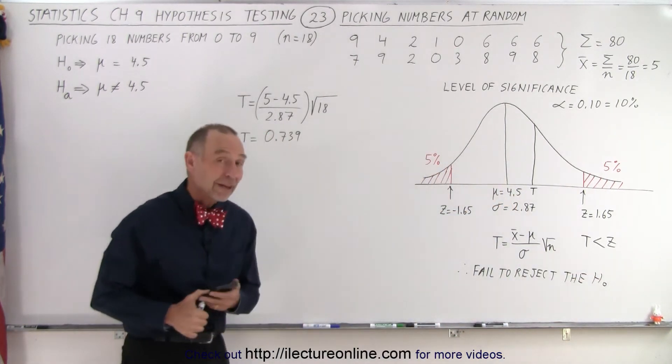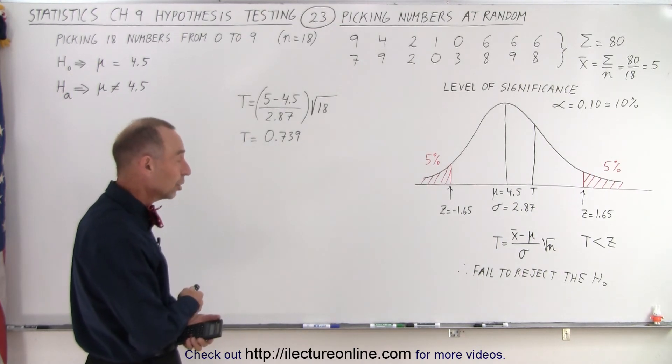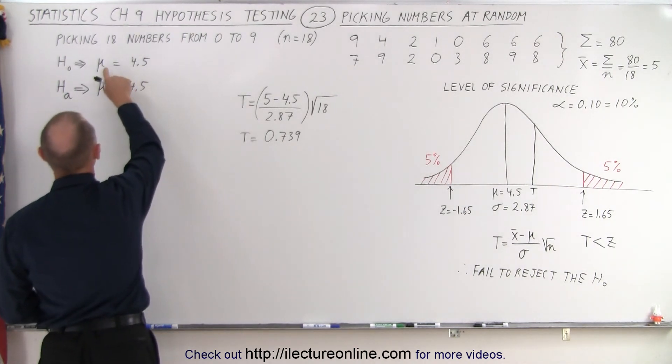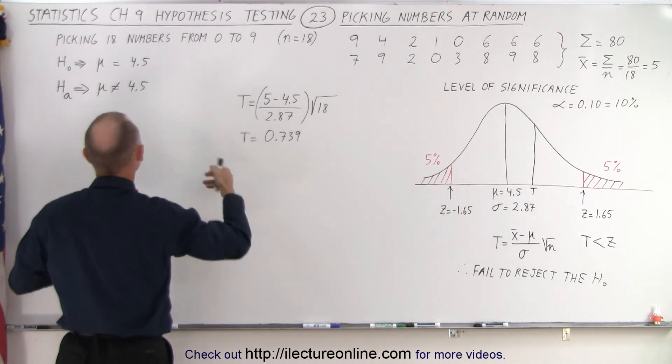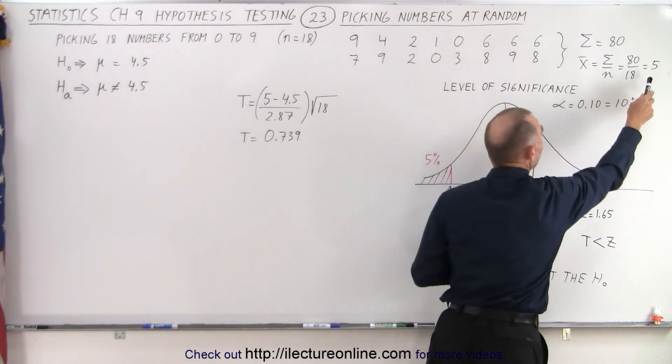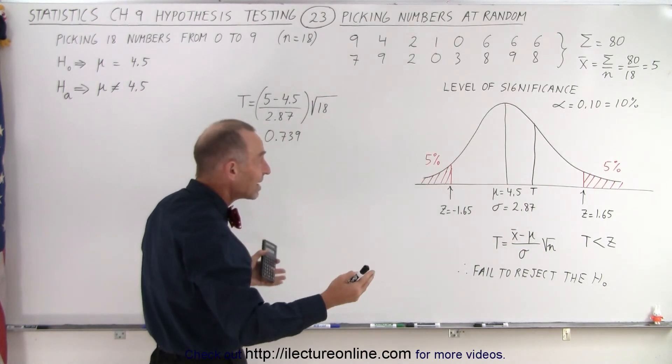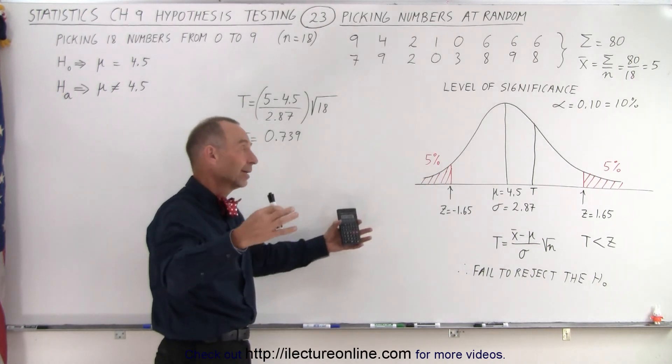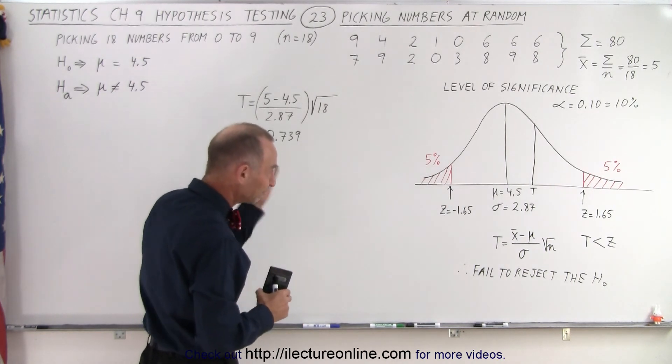So the fact is that the test-statistic ended up being far smaller than the z-score, which means we failed to reject the null hypothesis. The null hypothesis is that the average for a randomly picked set of numbers from 0 to 9 should be 4.5. Even though our average was 5, when we picked 18 random numbers, that was sufficiently close with the sample size of 18 to reject the null hypothesis, so we still claim that you pick any set of numbers at random, you should get an average around 4.5 or not too far away from that.